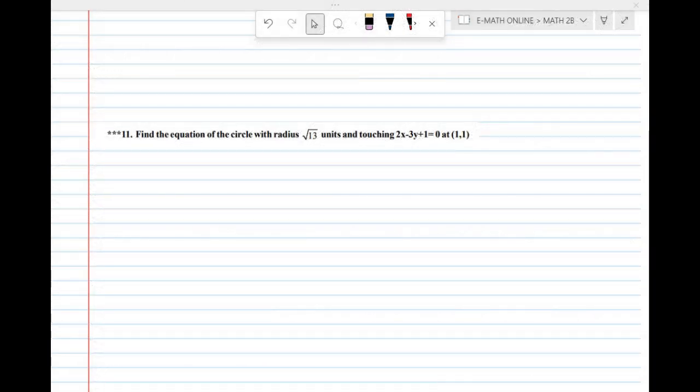Question number 11: Find the equation of the circle with radius root 13 units and touching 2x minus 3y plus 1 equal to 0 at point (1,1). It is a circle equation, then radius root 13, and at the same time the line touches at this point.